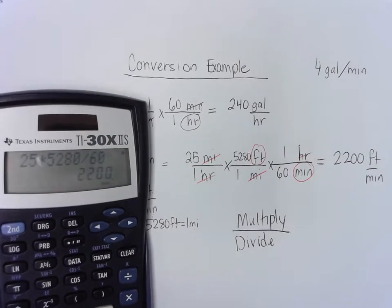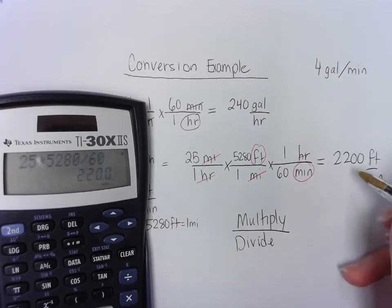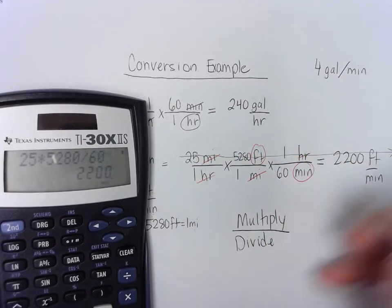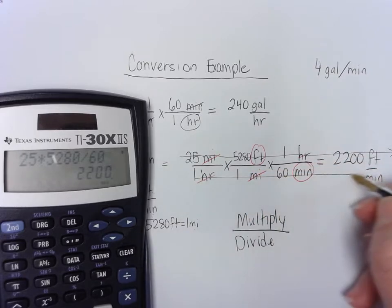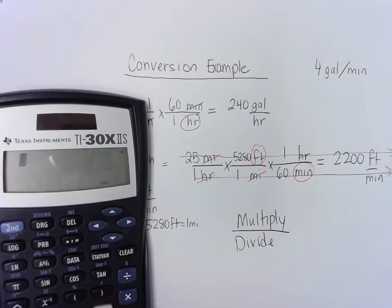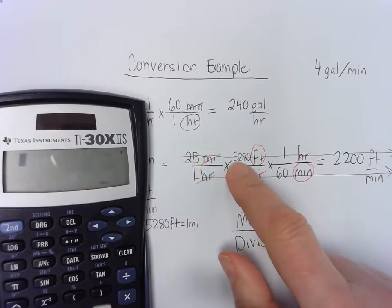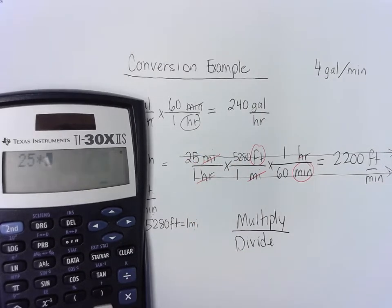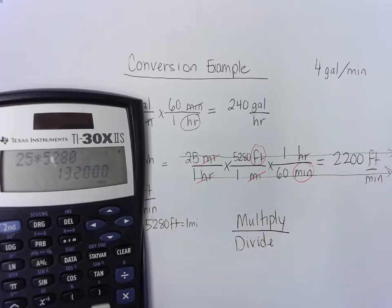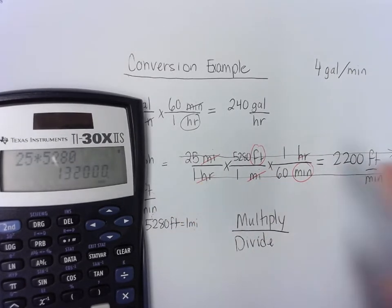Now, some people might want to use a calculator a little bit differently. You can work your way across here and get a number and work your way across here and get a number and then simplify it. So we could do that. Let's do that differently. 25 times 5,280, I get 132,000. And the only number I have on the bottom is 60. So now I can divide.